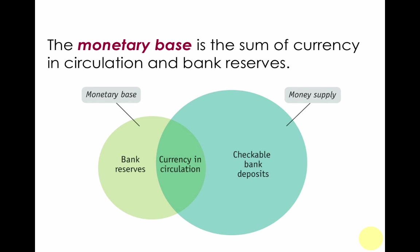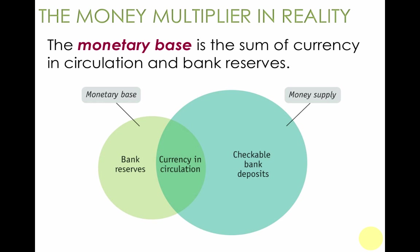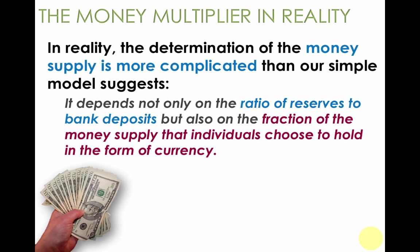Why is the actual money multiplier smaller than what we might calculate? The answer is leakages. There's a lot of checkable bank deposits in the money supply, but there's also a lot of cash. As much as people hold cash, that's money that's not sitting in banks being loaned out and being useful for the money multiplier.